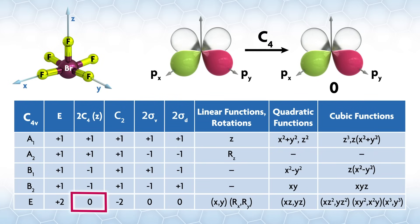There are two C4's. For any functions, operations in the same class will do the same thing to the functions. In other words, it doesn't matter if we look at the C1 4 or the C3 4 along the z-axis. During this operation, both functions move into the other - px moves into py, and vice versa. When this happens, we give those functions a zero.